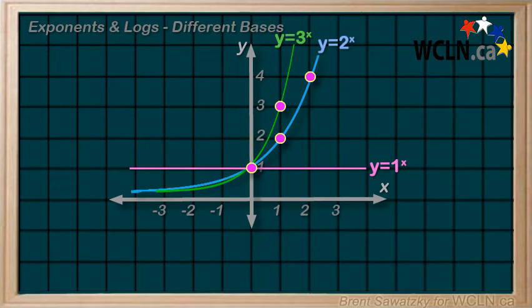And we understand why having a base of 1 doesn't really fit into our definition of an exponential function. But it is worth noting that this is the turning point for a change from exponential growth to exponential decay.